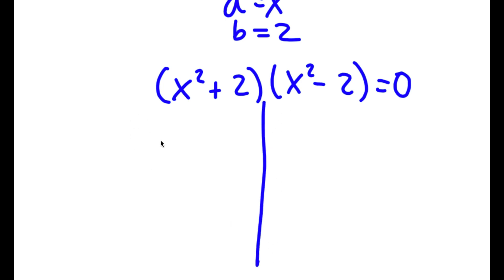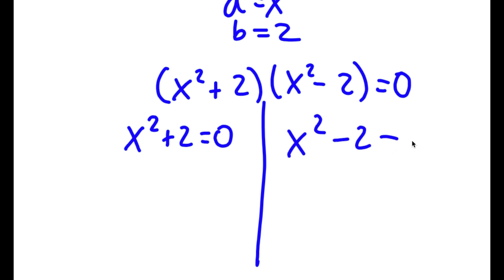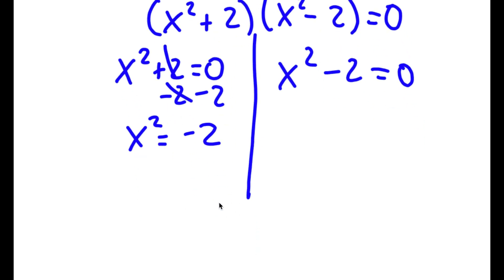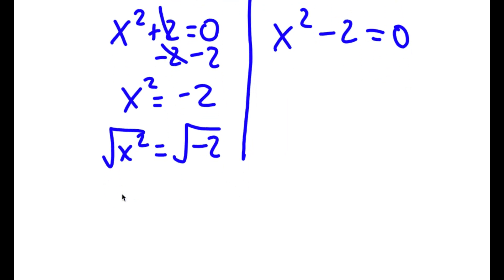This gives me two equations: x squared plus 2 equals 0 and x squared minus 2 equals 0. For x squared plus 2 equals 0, I subtract 2 from both sides to get x squared equals negative 2. Taking the square root on both sides gives x equals positive or negative square root of negative 2. Since the square root of negative 1 equals the imaginary number i, I get x equals positive or negative i times square root of 2.